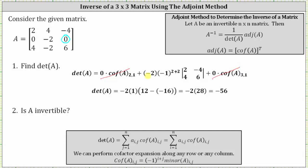Simplifying, negative one to the fourth power is positive one, so we have negative two times one. The determinant of the two by two matrix is equal to two times six, which is 12, minus negative four times four, which is negative 16. So 12 minus negative 16 equals 12 plus 16, or 28. The determinant is equal to negative two times 28, which is negative 56.